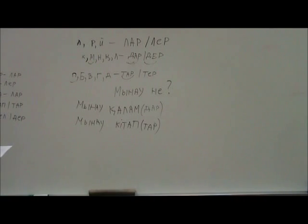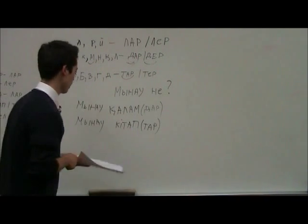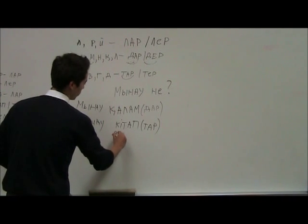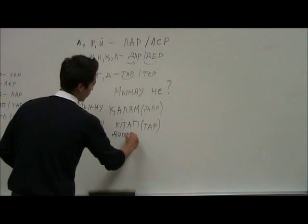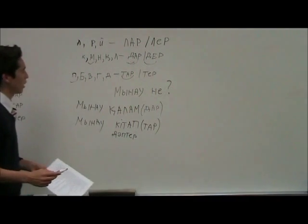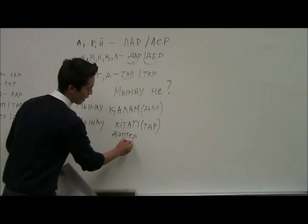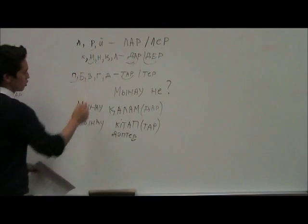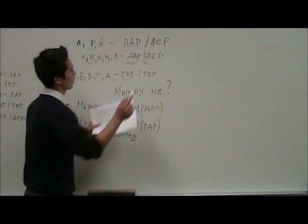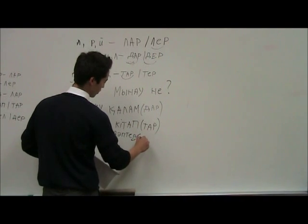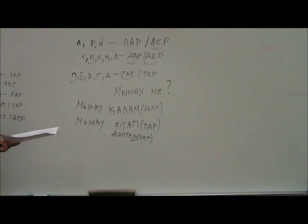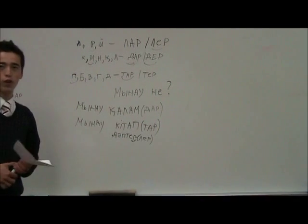Let's say the word 'daptyr'. Daptyr means notebook. The word ends with the letter r, so we add lir. Daptyr → daptyrlar. So these are some examples for you.